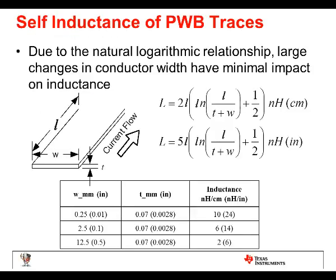Now we'll talk about AC parasitics — specifically self-inductance of PWB traces. If you have a trace hanging out in free air, the inductance follows a logarithmic formula. A 10 mil wide trace comes out to 24 nanohenries per inch. If we increase the width by a factor of 10, the inductance only drops to 14 nanohenries per inch. So increasing width in free air does not help the inductance very much.